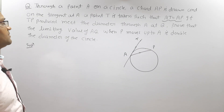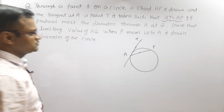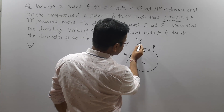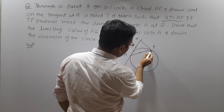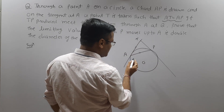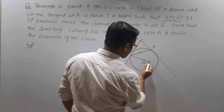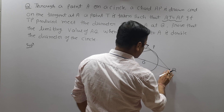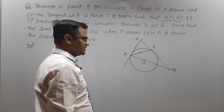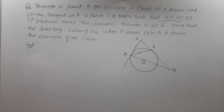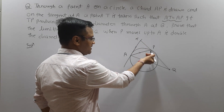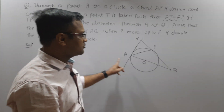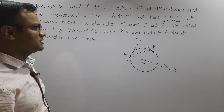If TP produced meets the diameter through A at Q — suppose O is the center of the circle. If we produce TP, then this line segment intersects AO extended at the point Q. The point of intersection of TP and AO is clearly Q. You have to prove that when P moves up to A — that is, when P moves along the circle approaching towards A — the length of AQ becomes double the diameter of the circle. This is actually the problem.